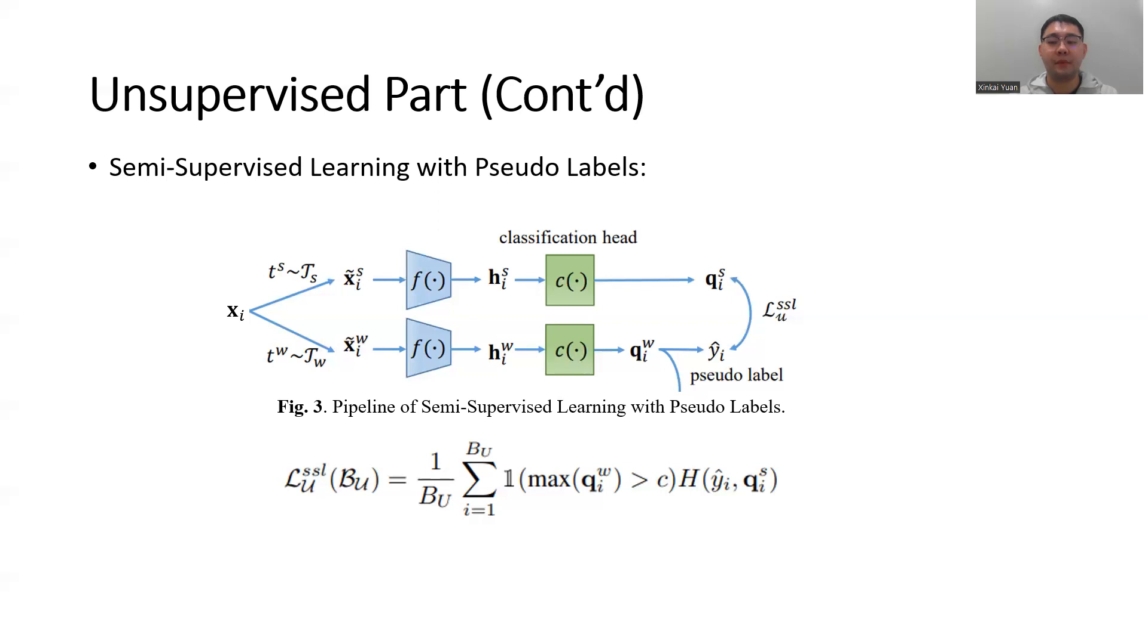We then use the logit q_iW to get a pseudo-label for that image if the maximum value of the logit is greater than a predefined threshold τ. If we get such pseudo-label, then we use it to compute the cross-entropy loss for the strongly augmented image.